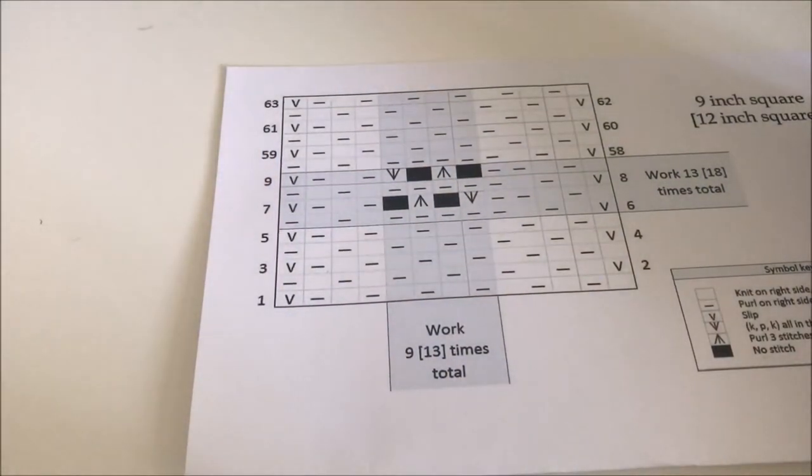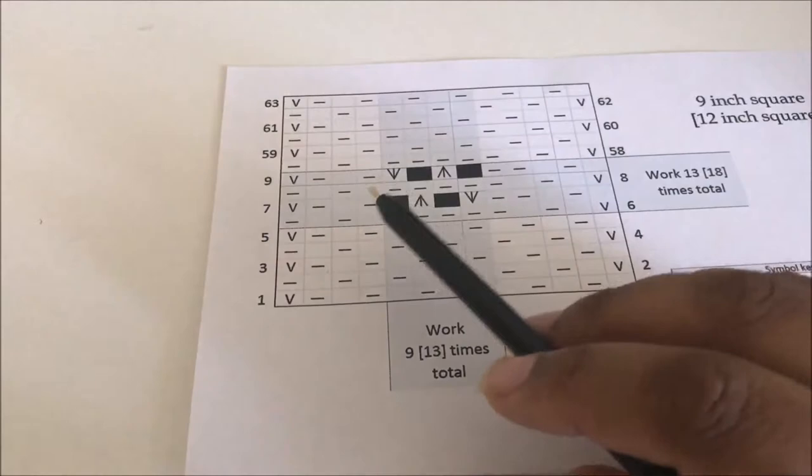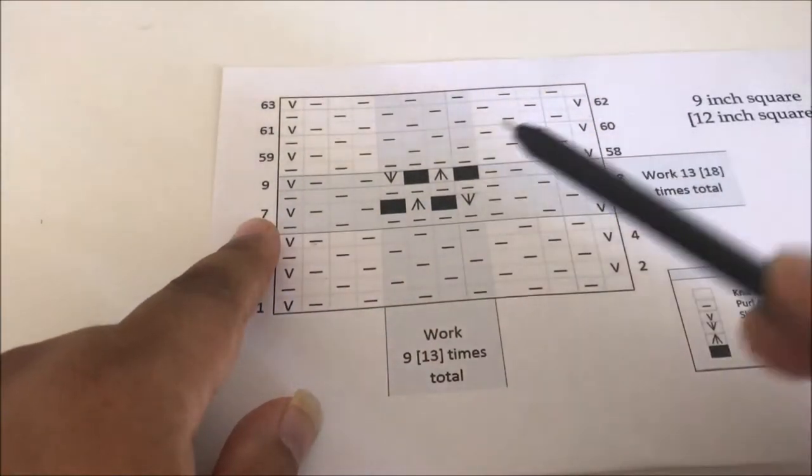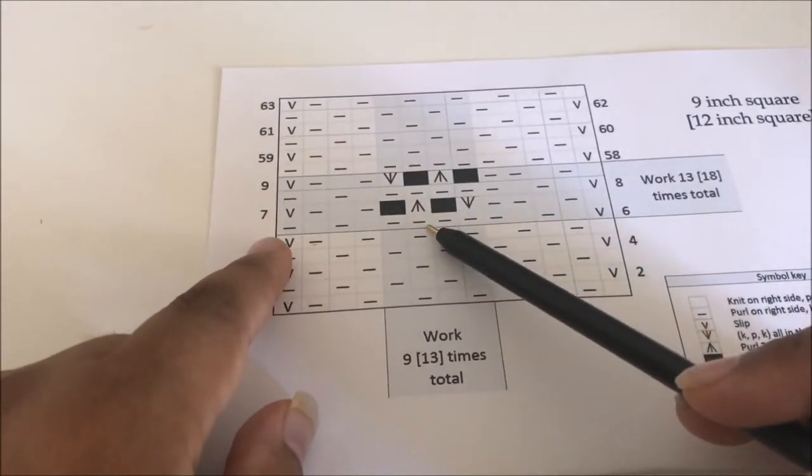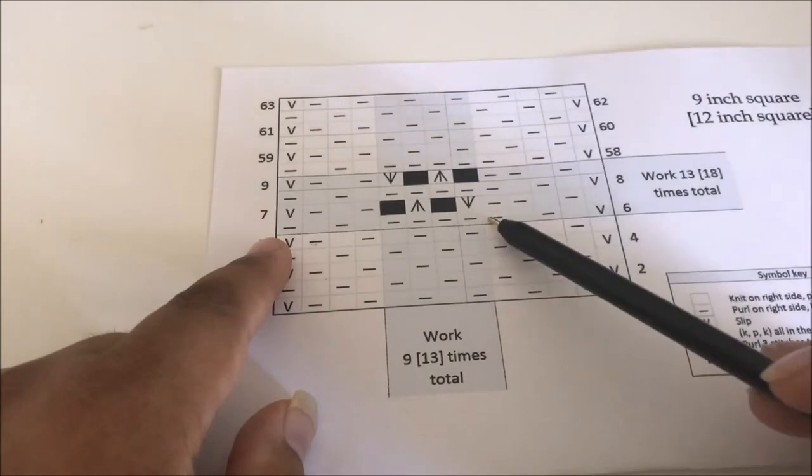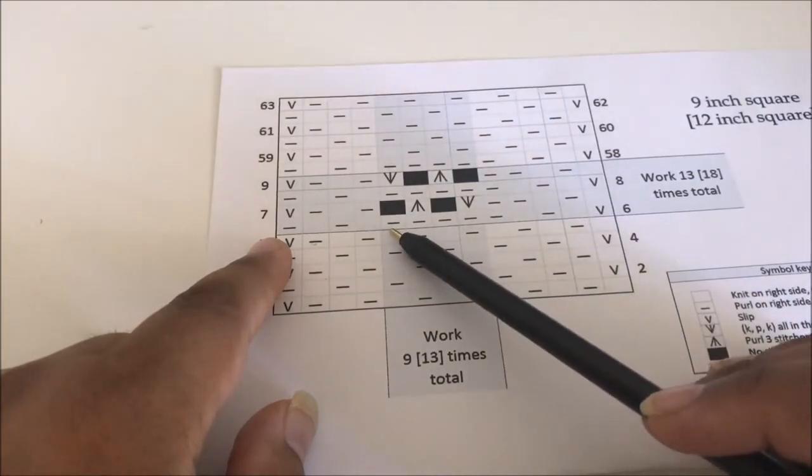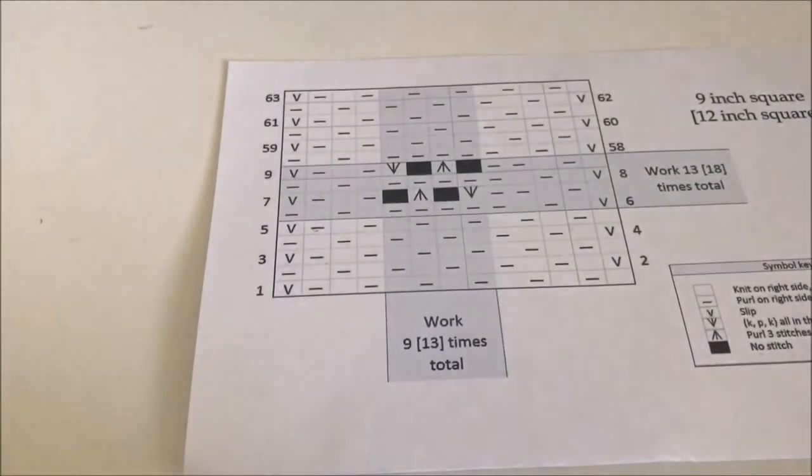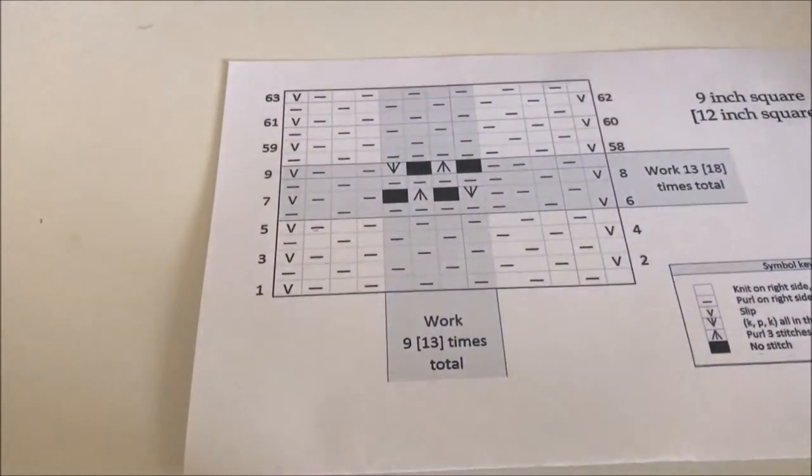All of the pattern stitches on this, all of these increases and decreases are worked on wrong side rows, and you know it's the wrong side because the numbers on the left. On the right side rows, what we're going to be doing is purling across the middle. We've still got our seed stitch border, but we're going to be purling across the middle. It's a very simple four stitch, four row repeat for the pattern.